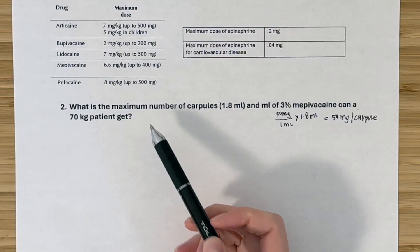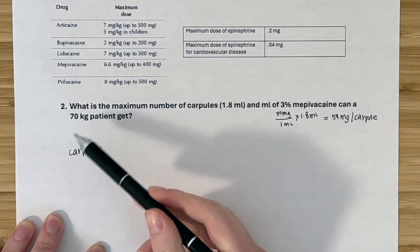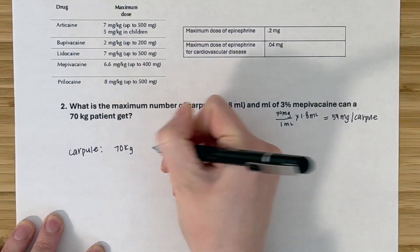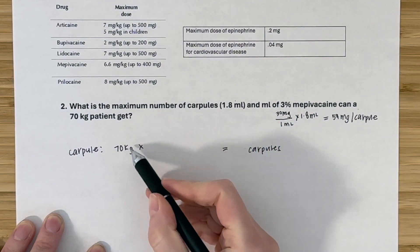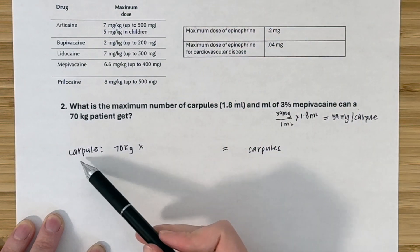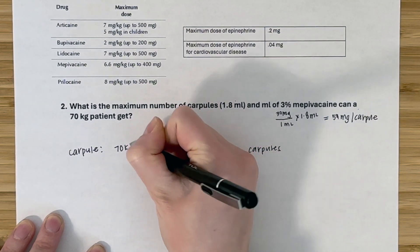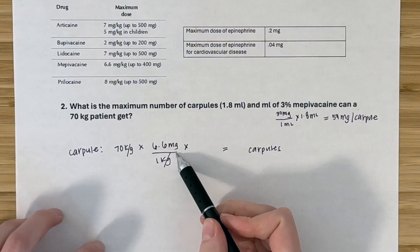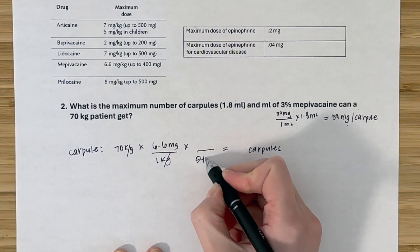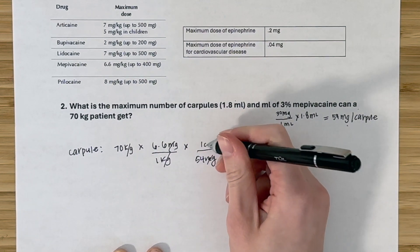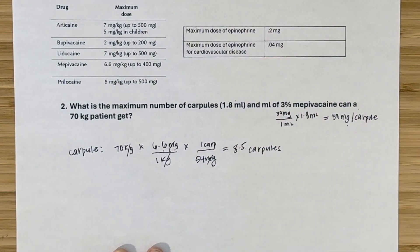For the carpule calculation: 70 kg × (6.6 mg/kg) eliminates the kilograms. Then dividing by 54 milligrams per carpule eliminates the milligrams, leaving carpules. So 70 × 6.6 ÷ 54 gives about eight and a half carpules.